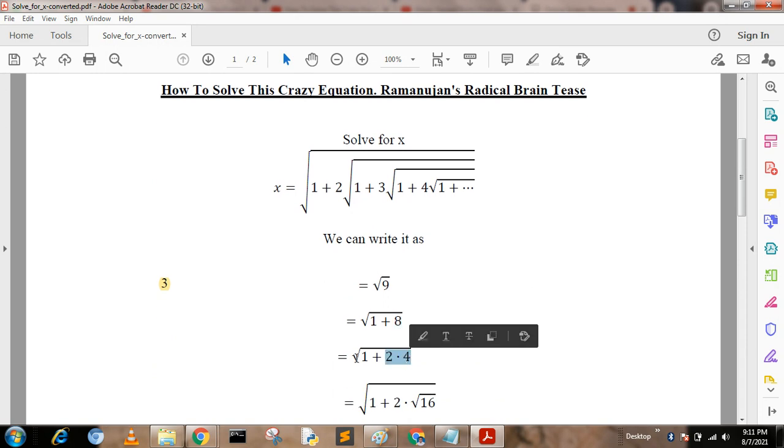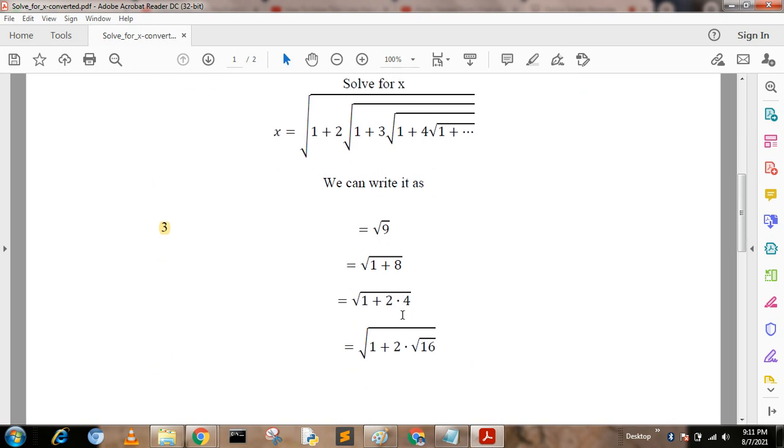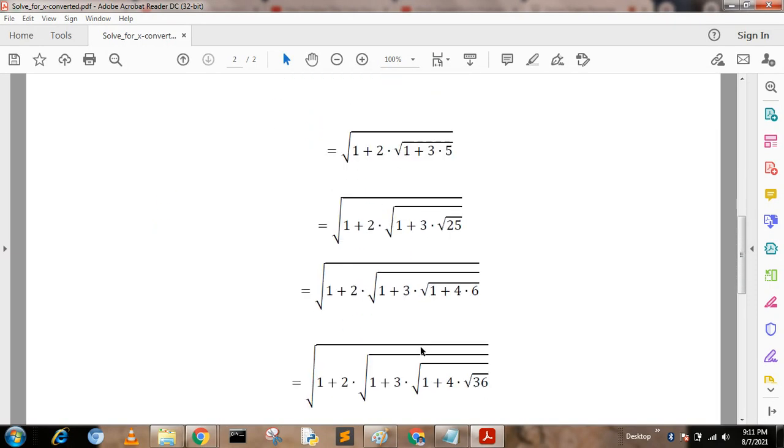Then again 4 means root over 16, that is root over 1 plus 2 times 16. Next, 16 means 1 plus 3 times 5, that is equal to root over 1 plus 2 dot root over 1 plus 3 times 5.